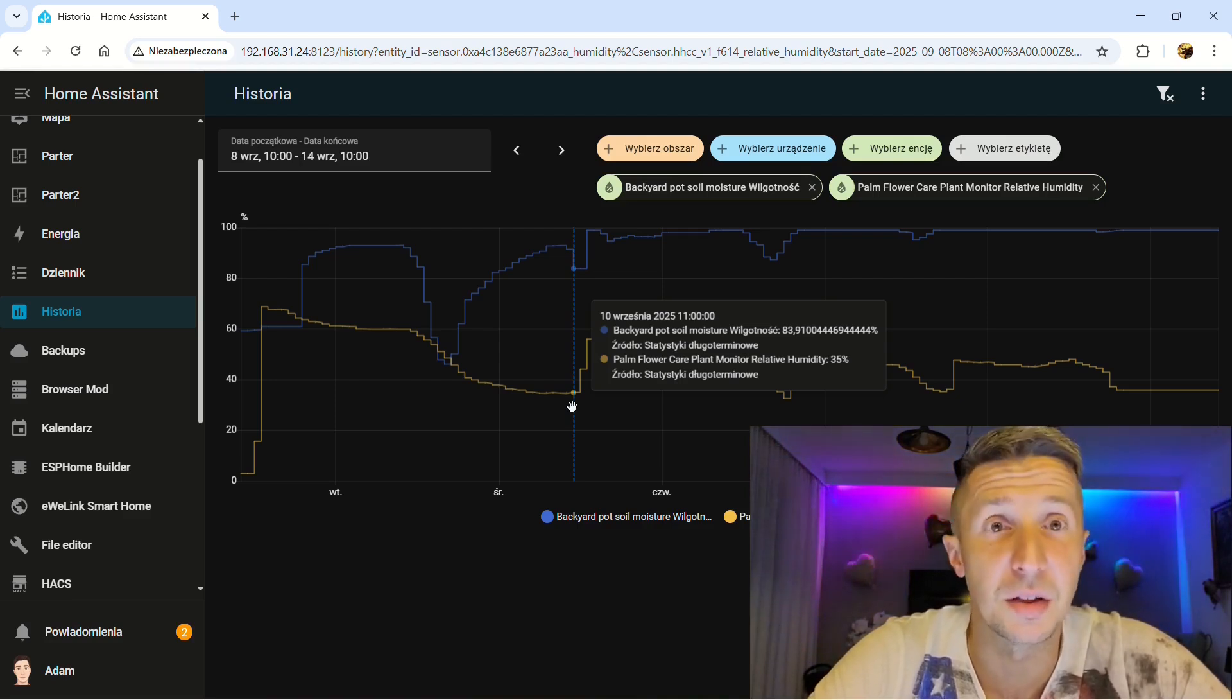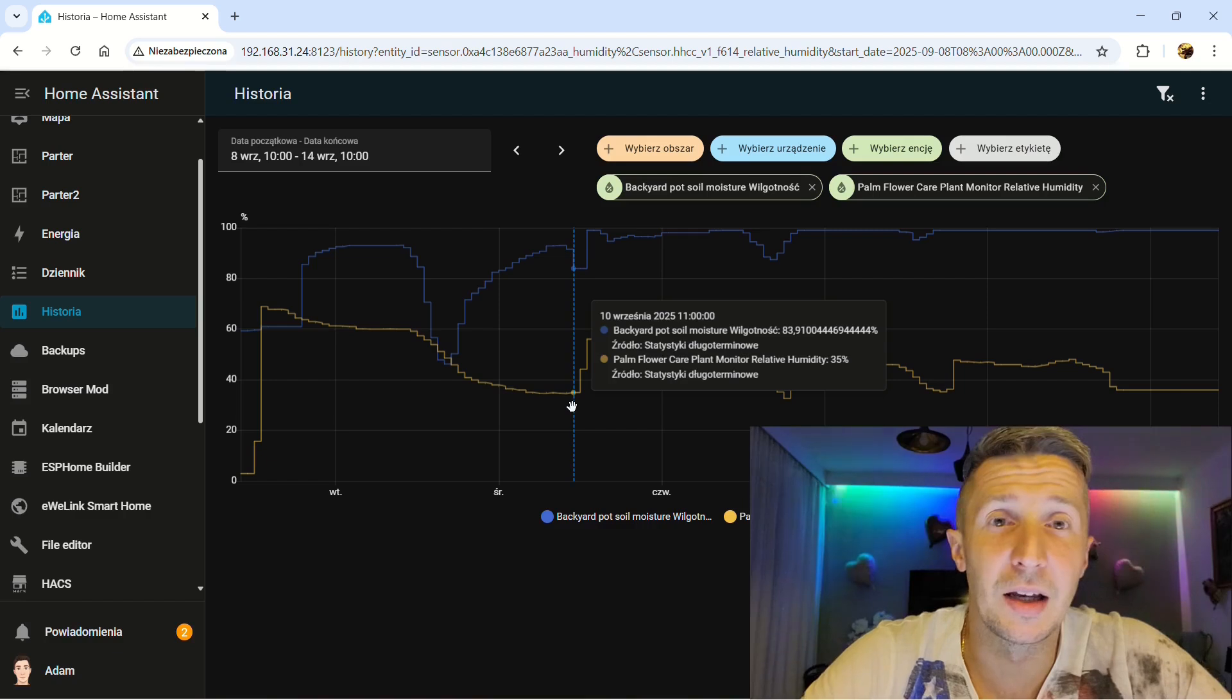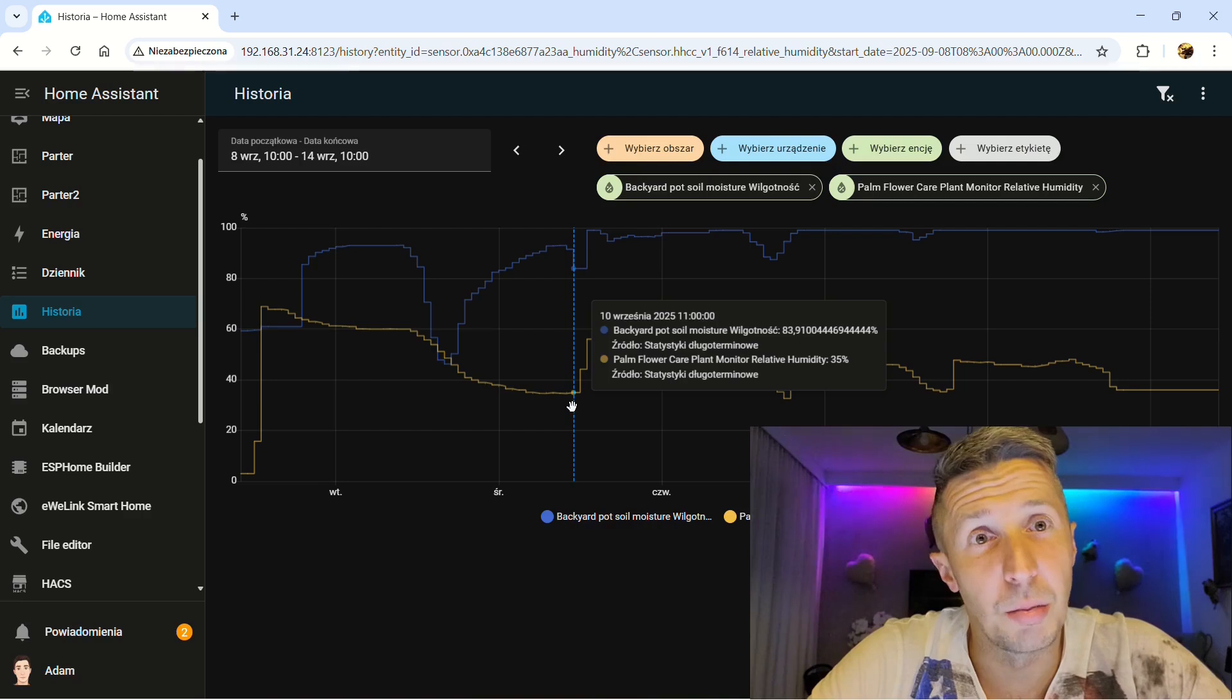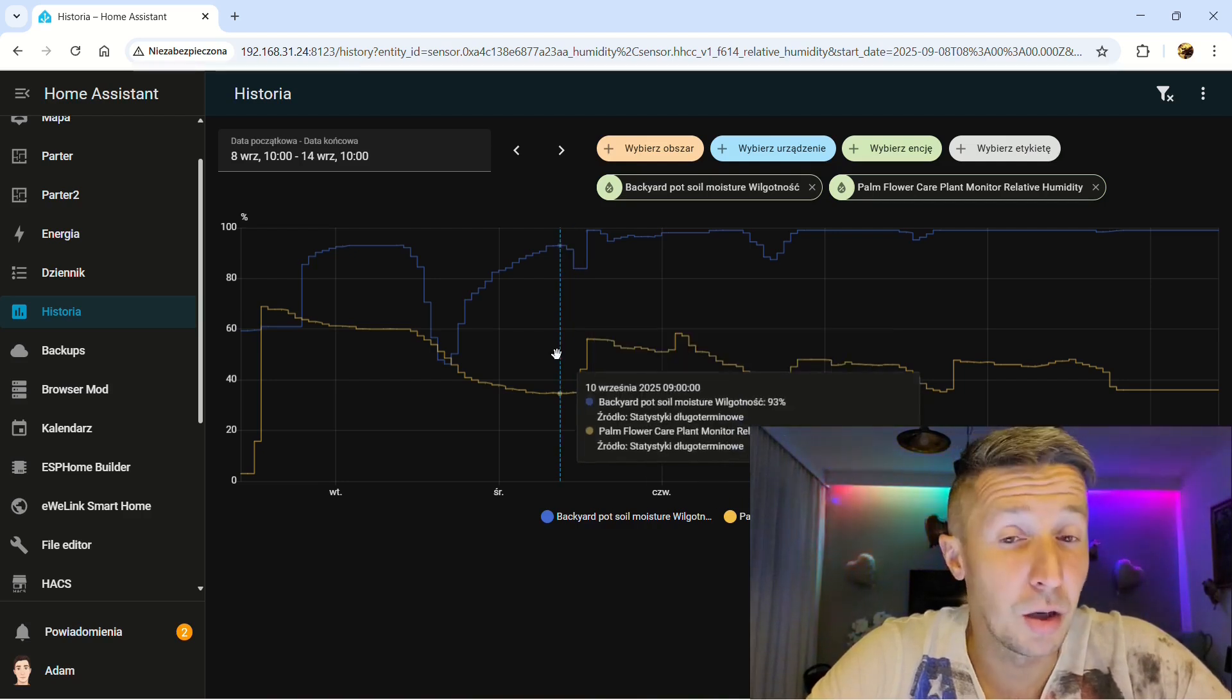Around 60% after watering the pot. So I think that was quite right. After watering, it grows really high, and then when the water was just going through the pot, it was dropping. I would say that Mi Flora is working well.